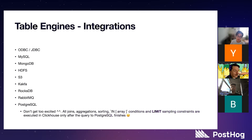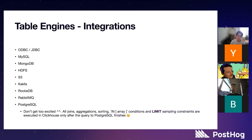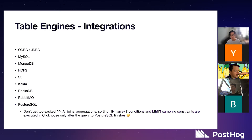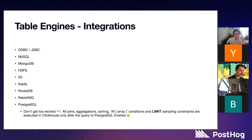We do have multiple replicas of ClickHouse reading from the same Kafka stream. We'll get into HA and sharding in a bit. Basically every node — there are four nodes responsible for reading off Kafka at the moment.